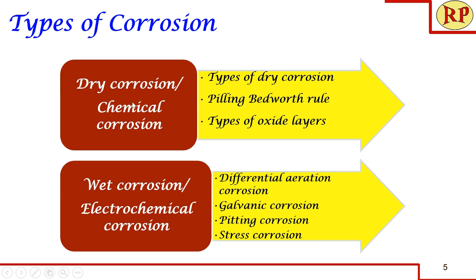There are two types of corrosion. One is dry corrosion, also called chemical corrosion — we call it dry corrosion because it occurs in the absence of moisture or any wet medium, and chemical corrosion because it occurs in the presence of some chemicals but in the absence of moisture. Next is wet corrosion, which happens in the presence of moisture or any medium such as acid or alkali, and we call this electrochemical corrosion. Under dry corrosion we are going to see types of dry corrosion, Pilling-Bedward's rule, and types of oxide layers.